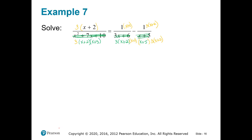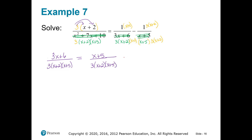Let's take a look at what we've got. Allow me to distribute in the numerator — looks like that first numerator is 3x plus 6 over this LCD. The second numerator is simply x plus 5 — anything multiplied by 1 is itself. We're subtracting, so allow me to distribute the 3 — that third numerator is 3x plus 6 over the same denominator.